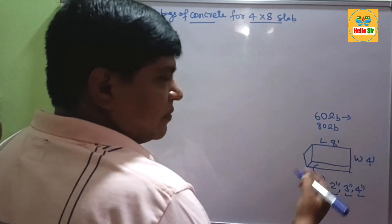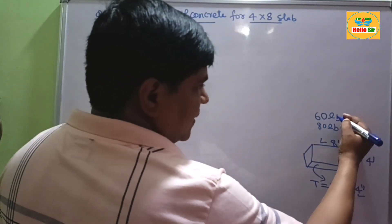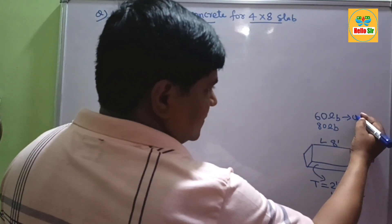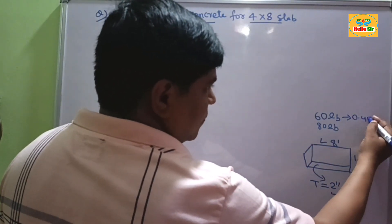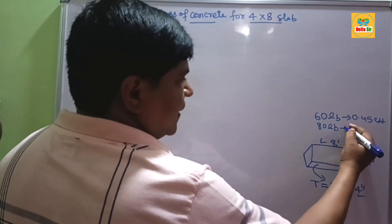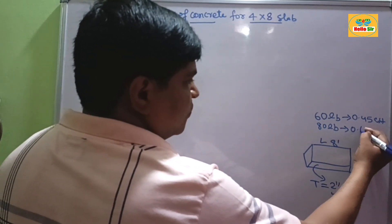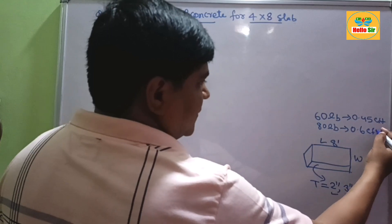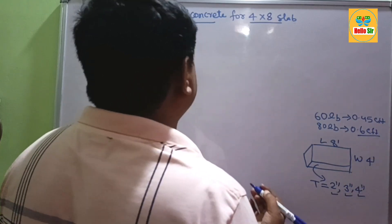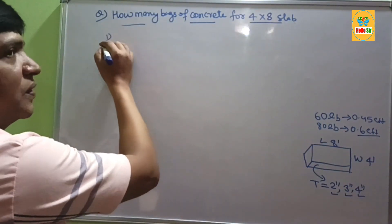60 lb bags yield how much concrete? One bag of 60 lb yields 0.45 cubic feet of concrete. 80 lb yields 0.6 cubic feet of concrete. Now come to the calculation.